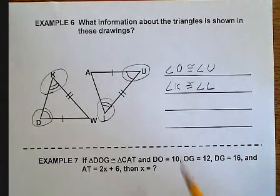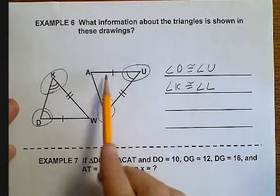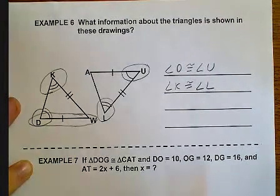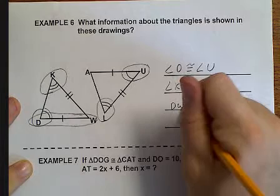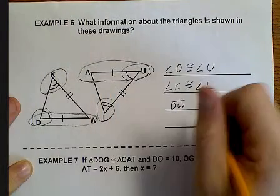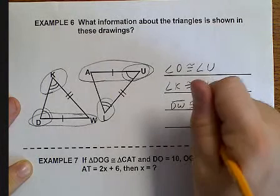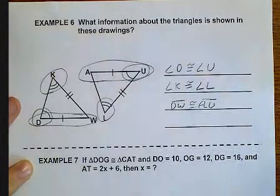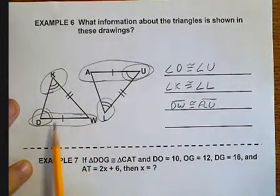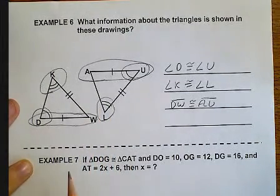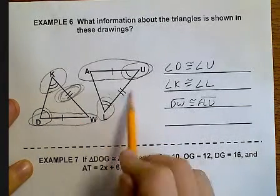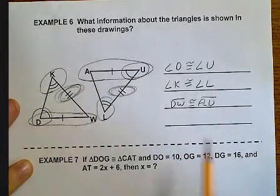Well, let's look at some sides. I've got a single hash mark over here on DW. I've got another single hash mark over here at AU. That tells me that DW is congruent to AU. That's what the hash mark means. And, if I come over here, I've got that double hash mark. It's on KW.